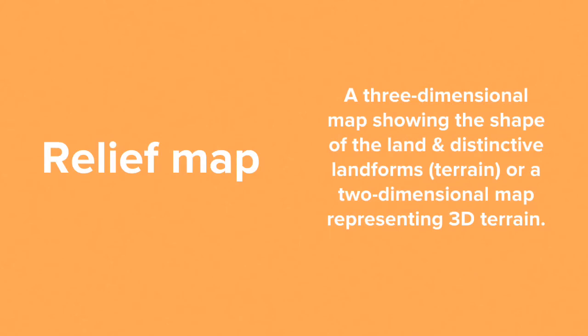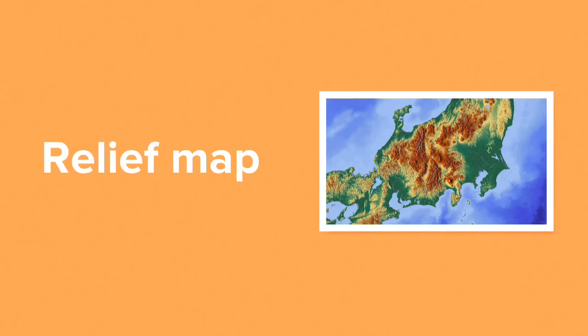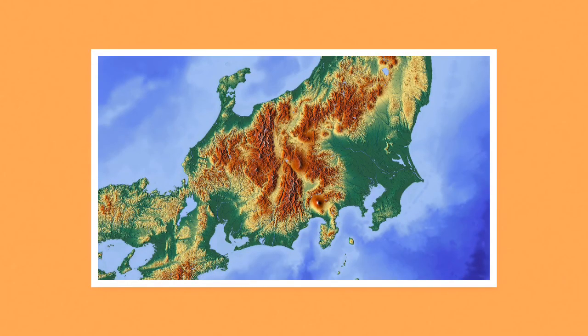Our final map is a relief map. This is a three-dimensional map showing the shape of the land and distinctive landforms — i.e. terrain. Or, it's a two-dimensional map representing 3D terrain. It looks a lot like this map to the right of Japan. This map doesn't use contour lines like a topographic map might, but it actually looks like a 3D drawing of those mountains to show us what they're like.